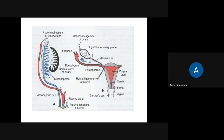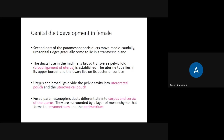After the development of the uterus and the broad ligaments, the two pouches become prominent: the recto-uterine as well as the vesico-uterine pouch. The fused part of the paramesonephric duct is the one which develops into the uterus as well as into the cervix.